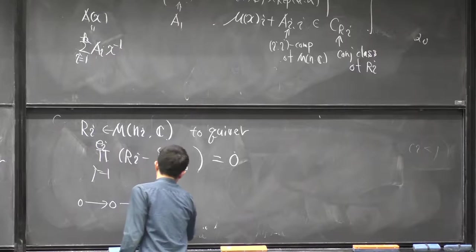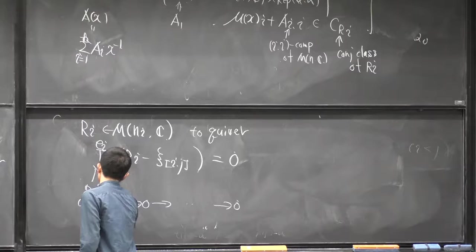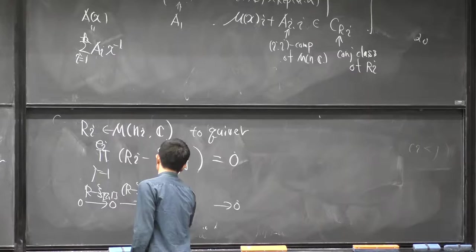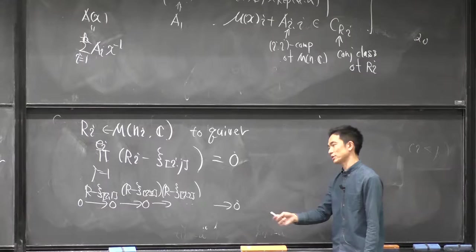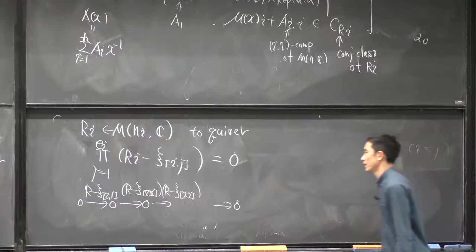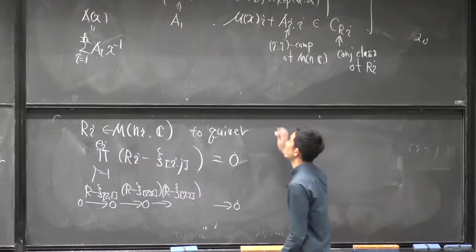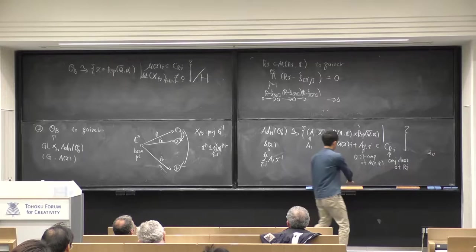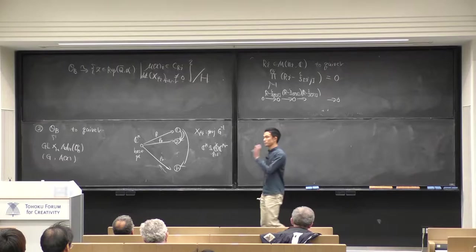We draw a quiver from the residue term. This construction is rather famous: from the conjugacy class of matrices, we can construct the hyperquiver. We choose some complex numbers c_i satisfying certain matrix equations; it is enough to consider the minimum polynomial. Then we can draw a type-A quiver by the conjugacy class of R: on the first arrow we put R minus c_i times identity, and the next arrow is the product, and so on.